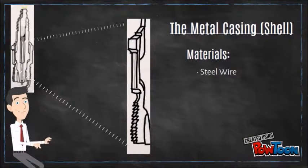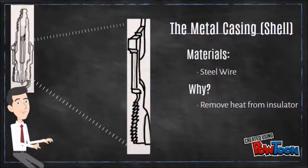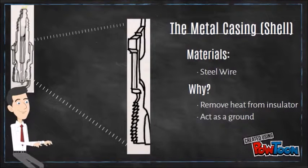The metal casing is made from steel wire. It is used to remove heat from the insulator. As the spark passes through the center electrode, the metal casing also acts as a ground.